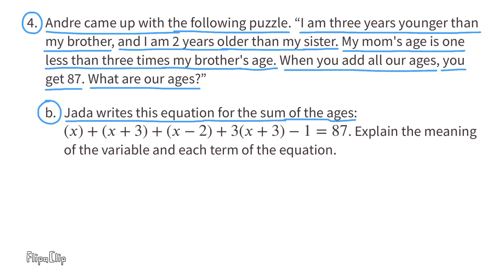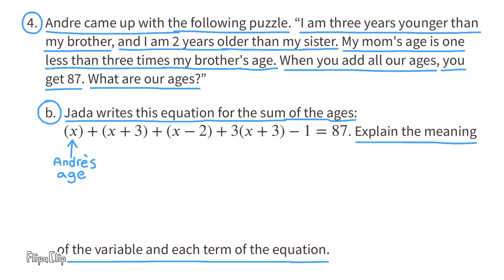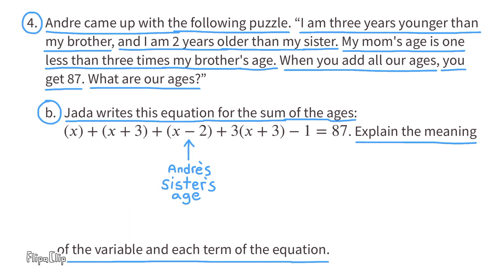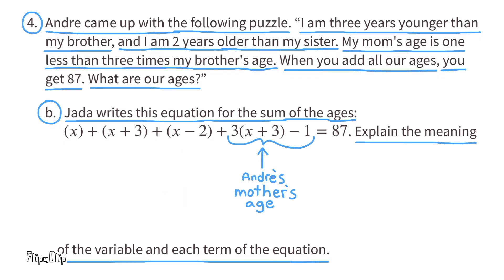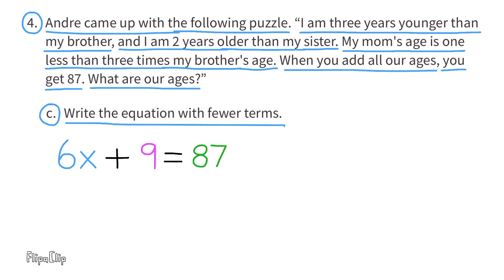B: Jada writes an equation for the sum of the ages. The x represents Andre's age, x + 3 represents his brother's age, x − 2 represents his sister's age, and 3(x + 3) − 1 represents his mother's age. C: Write the equation with fewer terms — after collecting like terms, the equation is 6x + 9 = 87.